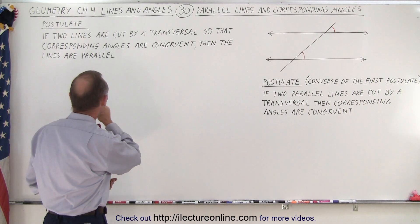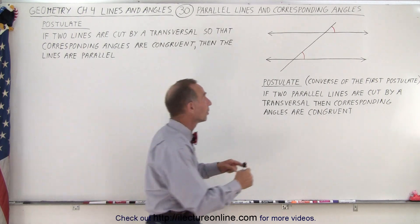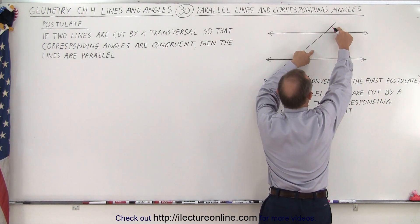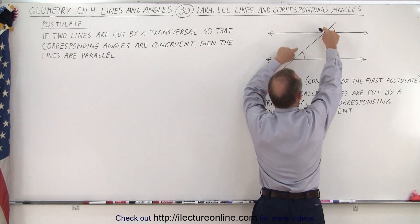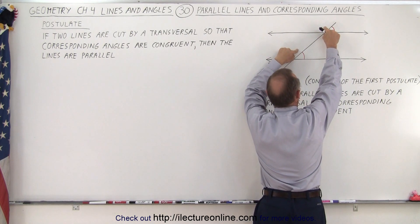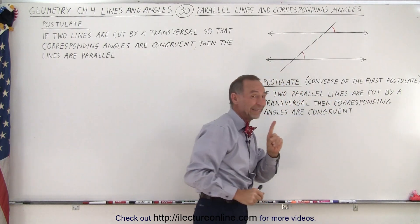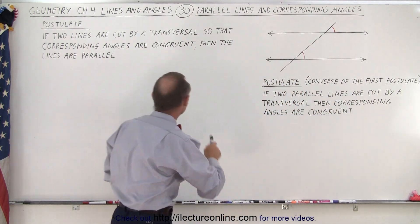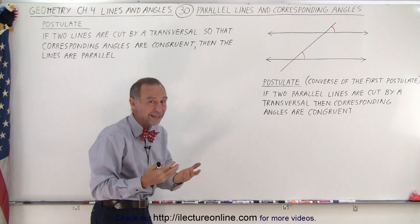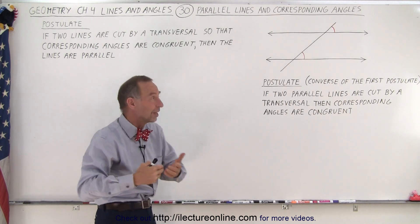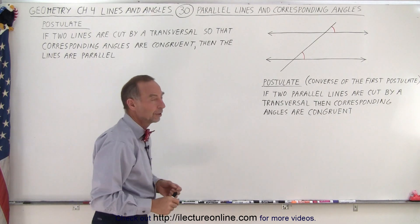So that the corresponding angles — now what are corresponding angles? These two angles are corresponding angles, these two angles are corresponding angles, these two are corresponding angles, and these two are corresponding angles. If those corresponding angles are congruent — meaning they have the same measure — then the lines are parallel.